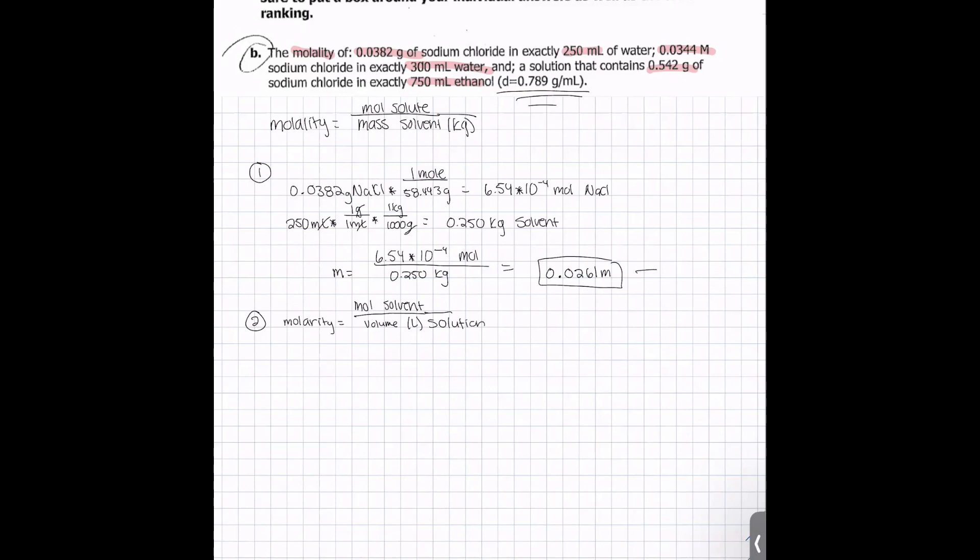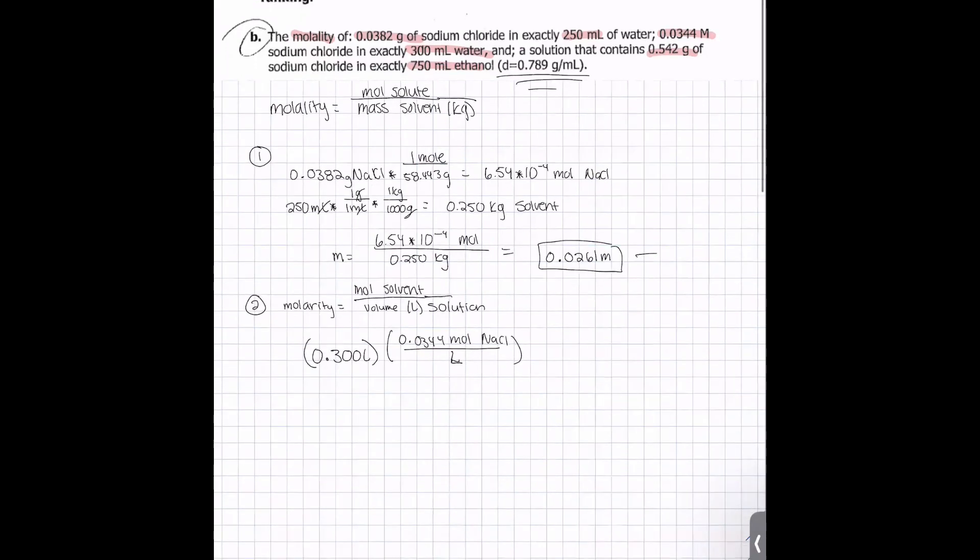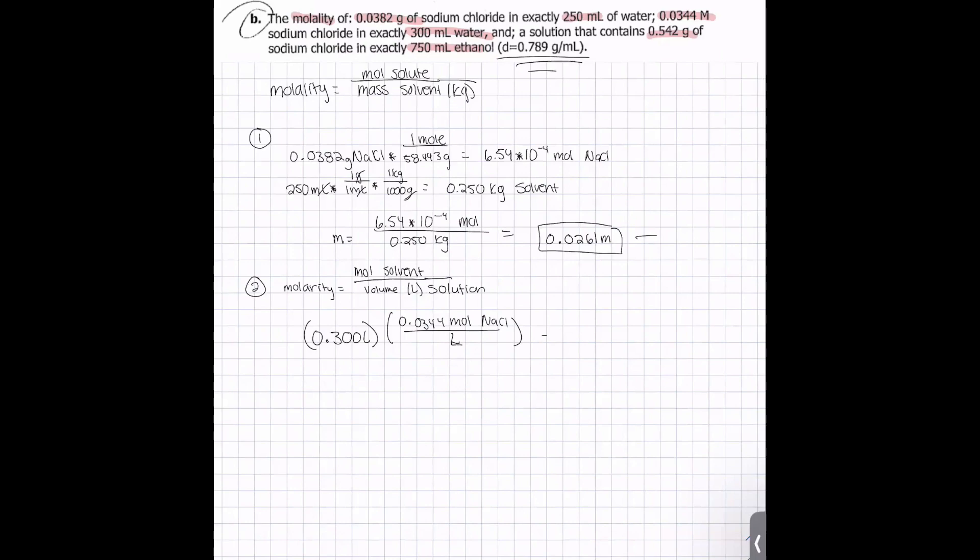For this problem, since the NaCl takes up such little space and has such a small mass compared to that of water, we can assume that the volume of the solution is equal to the volume of the water. So we have 0.300 liters, and we're going to multiply that by our molarity, which is 0.0344 moles of NaCl per liter to get how many moles are in our 0.3 liters, and that will get us 0.01032 moles of NaCl.